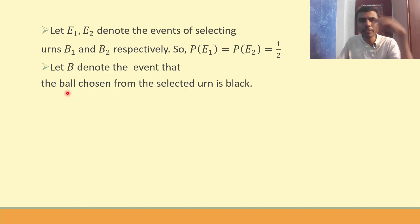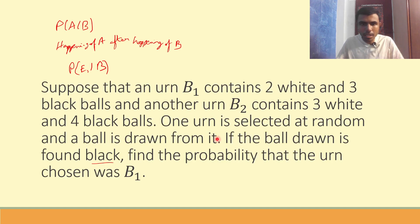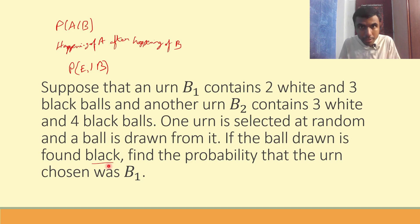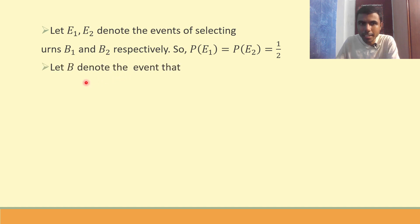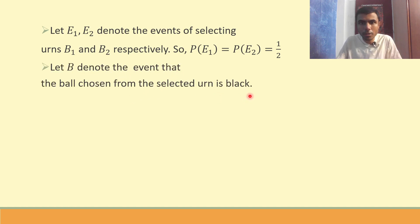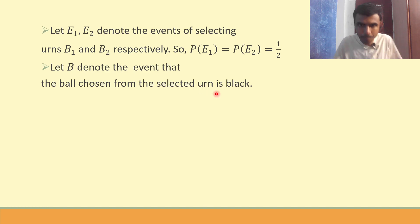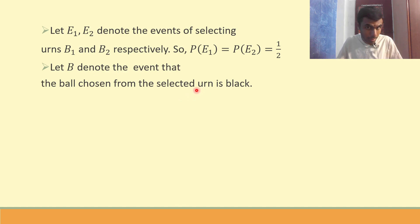Let B denote the event that the ball chosen from the urn is black. The question says if the ball drawn is found black — so I need an event in which the ball drawn is black, and that event I'm defining as B: the event that the ball drawn is black from the selected urn. In the exam, write 'urn' only, using the terminology given in the question.